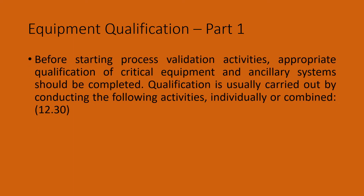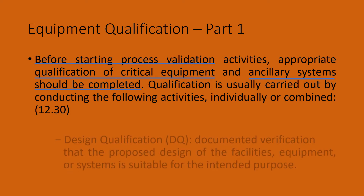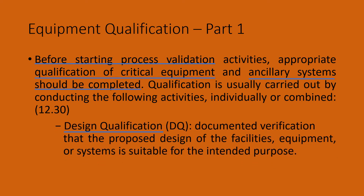The guideline says, before starting process validation activities, appropriate qualification of critical equipment and ancillary systems should be completed. Qualification is usually carried out by conducting the following activities individually or combined. This is the prescription under section 12.30 of ICH Q7. The guideline also says, the design qualification, abbreviated as DQ, is a documented verification that the proposed design of the facilities, equipment or systems is suitable for the intended purpose.